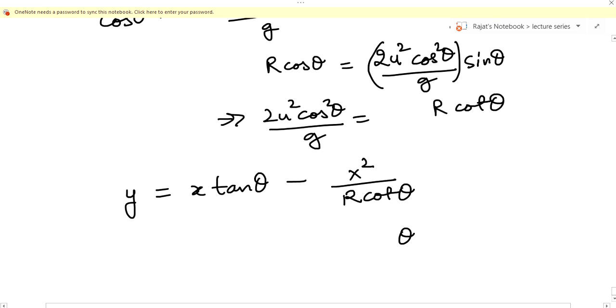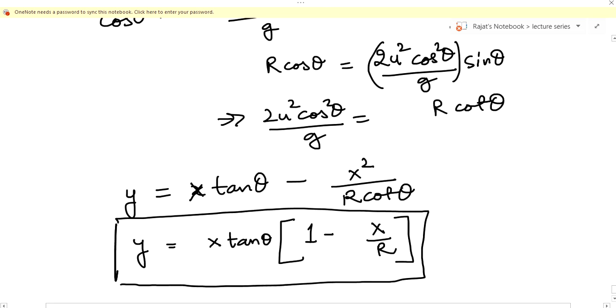Now you can see a very good expression is emerging. This cot theta is nothing but 1 upon tan theta, so if I take x tan theta common I will get 1 minus x by R. So y equals x tan theta times 1 minus x by R. This is another form of equation of trajectory.